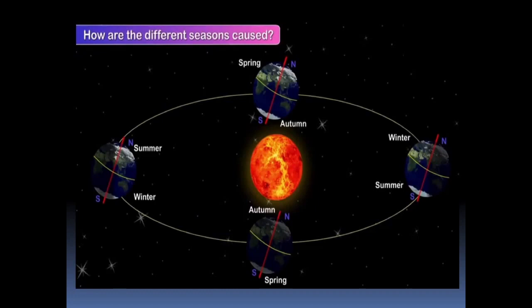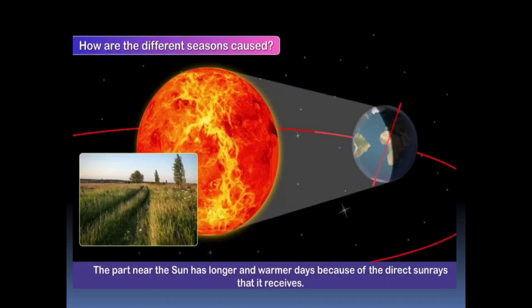The part near the sun has longer and warmer days because of the direct sun rays that it receives. Therefore, this part of the earth experiences summer season.